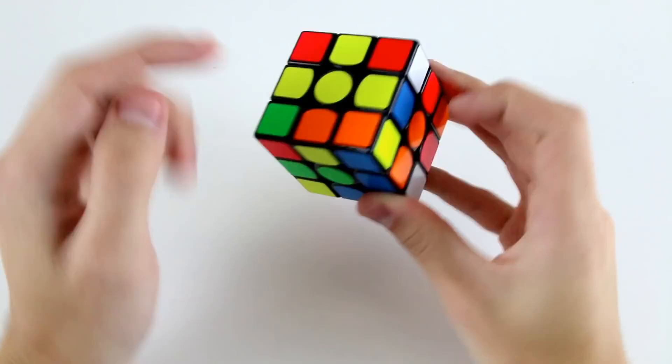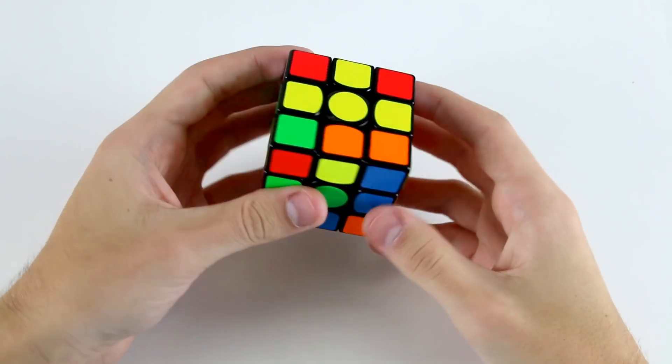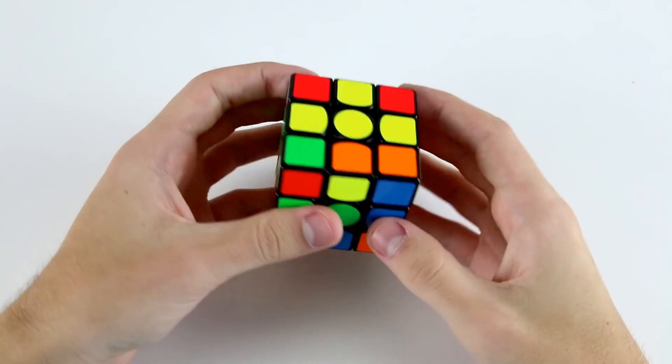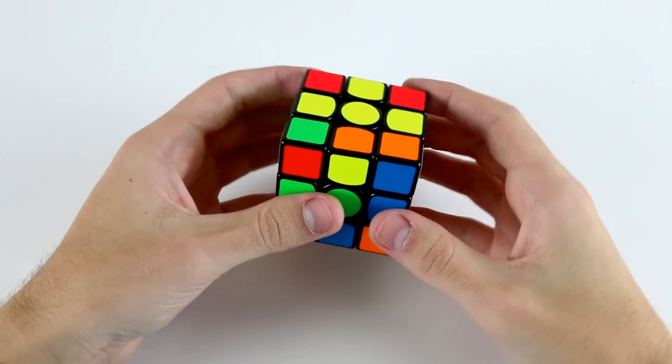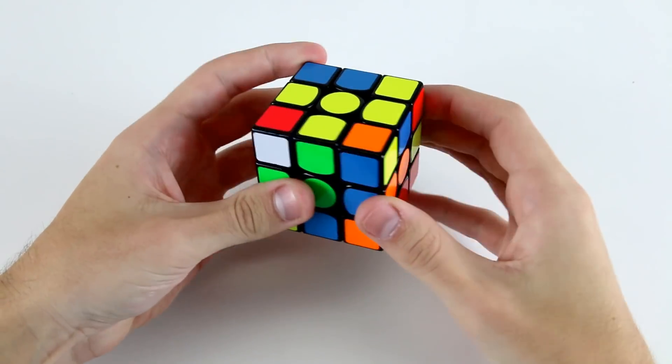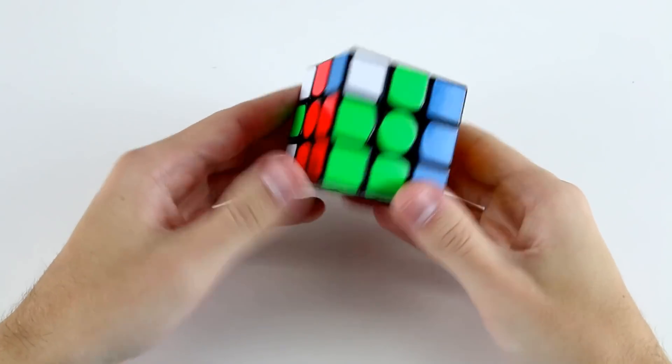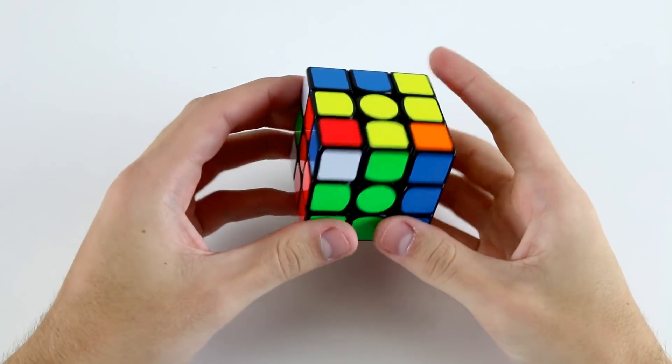Its corner piece is back here. In order to insert it and form an extended cross using keyhole, I can just do r' u' r, then d2, just like that. Now I've got my x cross like that.